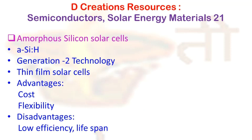The advantages of amorphous silicon solar cells include low manufacturing cost, no requirement for large accommodation area, availability in different shapes, use in light sensors, high charging efficiency, and high flexibility. The disadvantages include low efficiency and a short lifespan compared to crystalline silicon wafer-based solar cells. Nevertheless, this is an important option in the second-generation solar cell category.